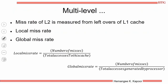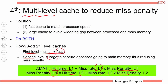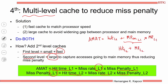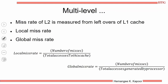The miss rate of the second level is measured from the leftovers of L1. So AMAT is: first we look at the hit at L1, then the miss penalty at L1. This miss penalty at L1 is hit at L2 plus miss rate of L1 times miss rate of L2 times miss penalty of L2. So this term now expands further. The miss rate of L2 is the leftover accesses from L1 — the ones which L1 cannot satisfy will come to L2.